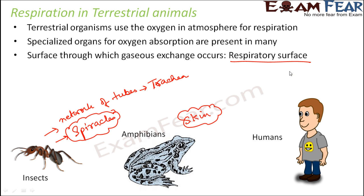Human beings have specialized organs called lungs. Lungs alone do not form the entire respiratory system — there are other parts like the nostrils and the windpipe — but lungs are the main organs where the actual exchange of gases takes place. In higher classes you will learn about the human respiratory system in more detail; you can also refer to the Class 11 biology video lessons for that.